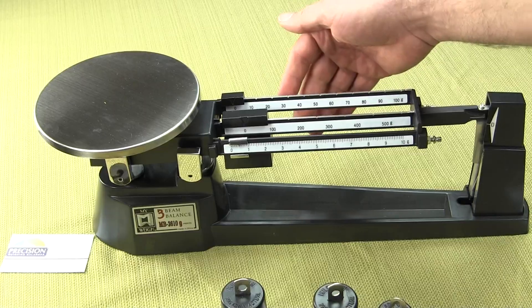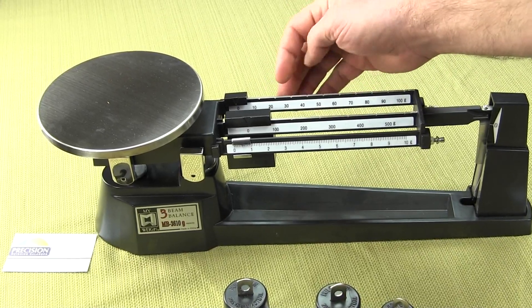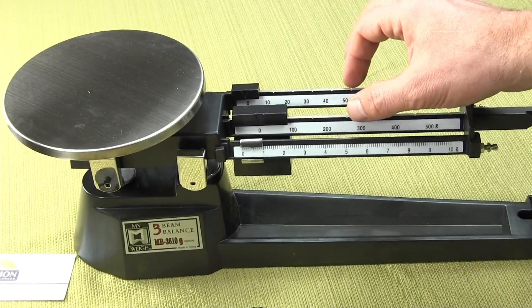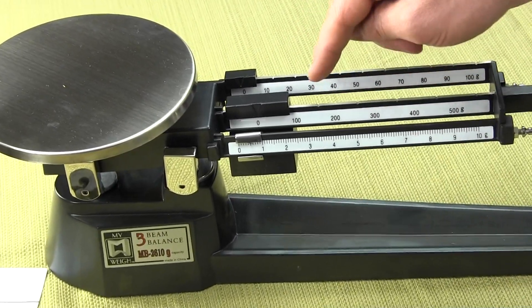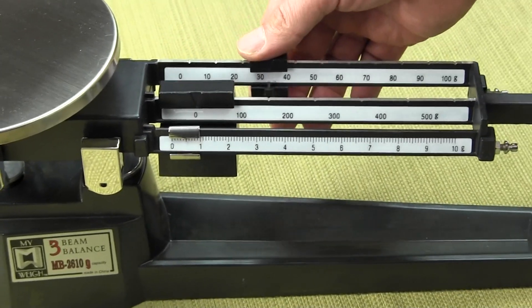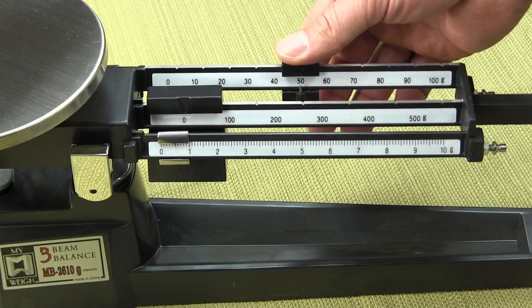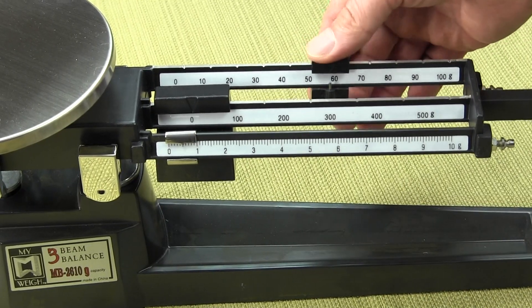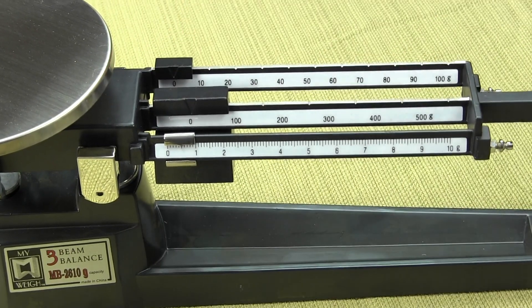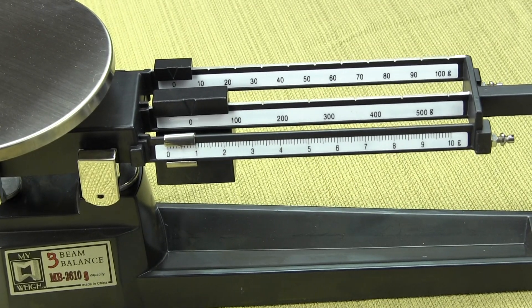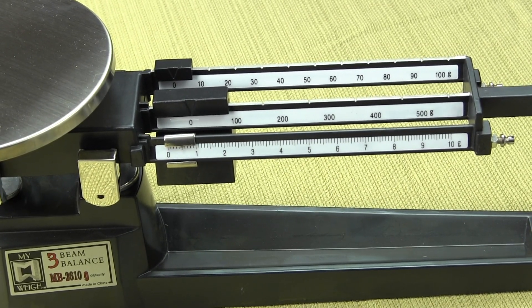Regarding the beam itself, you'll notice on the top there's some grooves here. The two rear beams have grooves. The front does not. There's a groove here, here and here. When I slide the rider it needs to rest in the groove itself. That's a nice design so there's no question what the weight reading is.